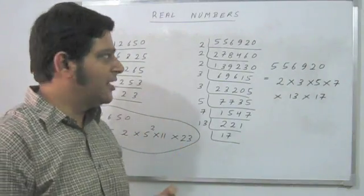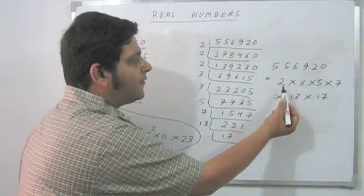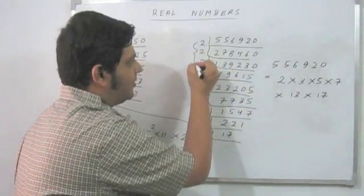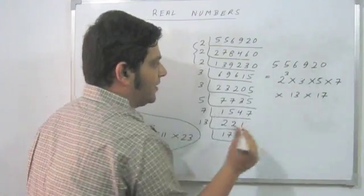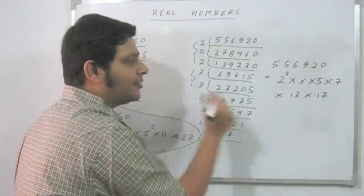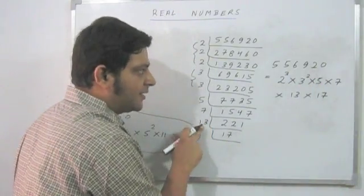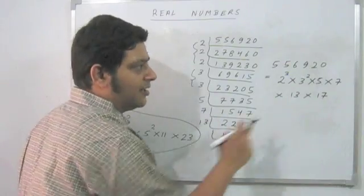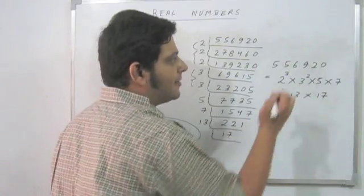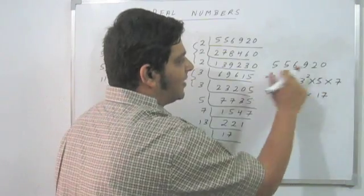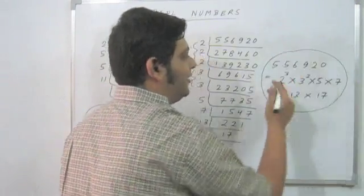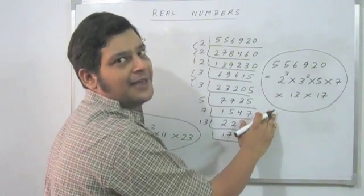But my question does not finish here. I also need to check how many times they occur so that I know their power. The power of 2 in this case, as you can see here, is 3. How many 3s occur? There are two 3s in it. 5, 7, 13, and 17 occur only once. And hence I can say that the prime factorization of 556920 is this value.